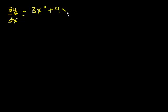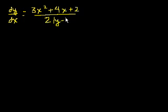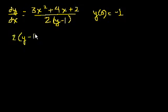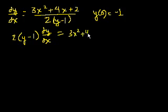The second example is: the first derivative of y with respect to x equals 3x squared plus 4x plus 2, over 2 times (y minus 1). They give us the initial condition y(0) equals negative 1. This is a separable differential equation. Let's separate it by multiplying both sides by 2(y minus 1), giving us: 2(y minus 1) times dy/dx equals 3x squared plus 4x plus 2.